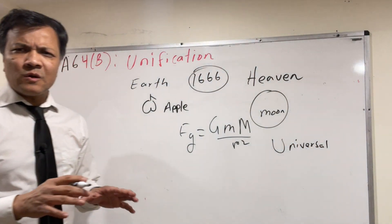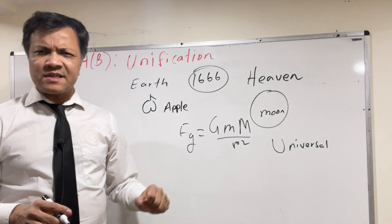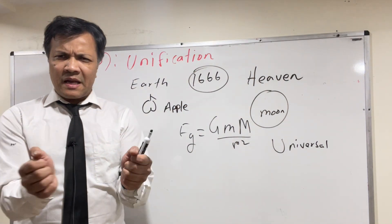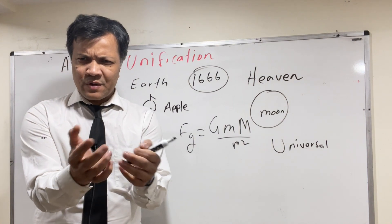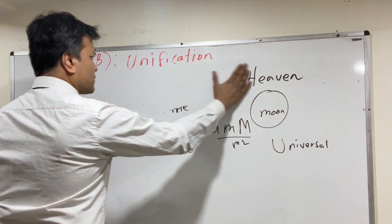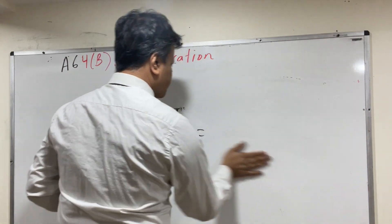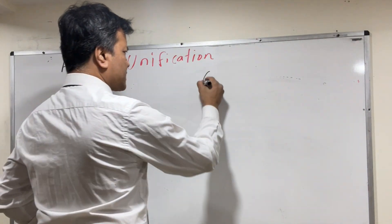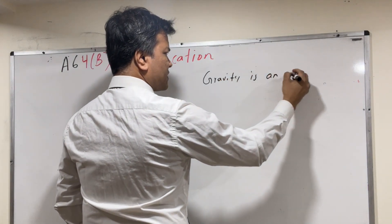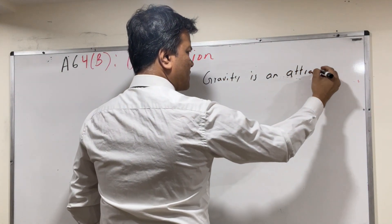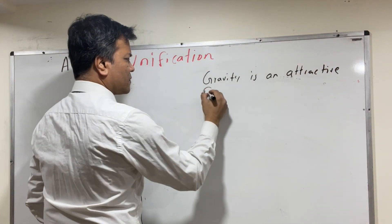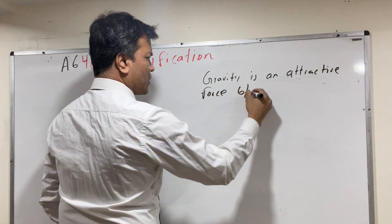The second unification was done by Faraday and Maxwell, who put the electric force and magnetic force together. We are still waiting for a third unification. Now let's define gravity: gravity is an attractive force between two bodies.